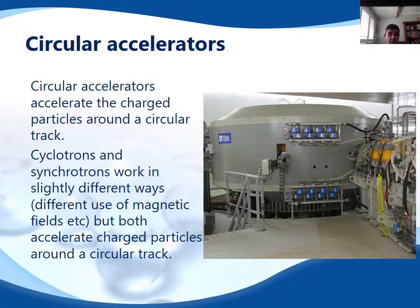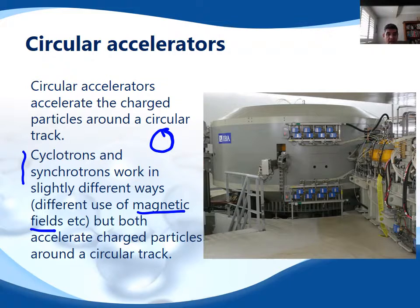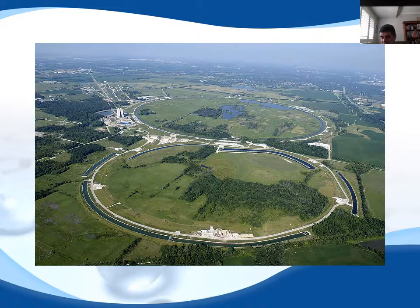Circular accelerators are obviously much smaller than kilometre-long linear accelerators and work by centripetal force and centripetal acceleration as particles move in a circle. Cyclotrons and synchrotrons work in slightly different ways, making use of magnetic fields. A moving charge creates or induces a magnetic field, and we can apply forces by applying magnetic fields to these charges to continue accelerating them. The main takeaway is that circular particle accelerators are all about accelerating charged particles to huge speeds.